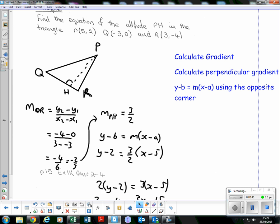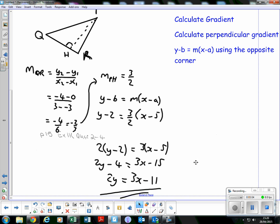Find the perpendicular gradient: flip two thirds to get three over two, change the sign from negative to positive. Substitute: P is on this dotted line. We don't know where H is, but just use P(5, 2). So y minus 2 equals three over two(x minus 5).